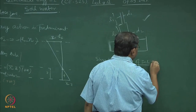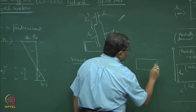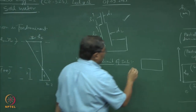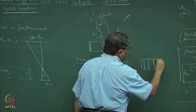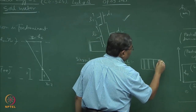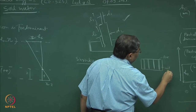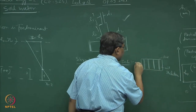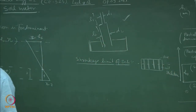You must have done the laboratory experiment where a soil sample is taken and then air-dried. This is how I can idealize it: this specimen is having pores. So this is the pore, this is the soil skeleton, and this is the center line.